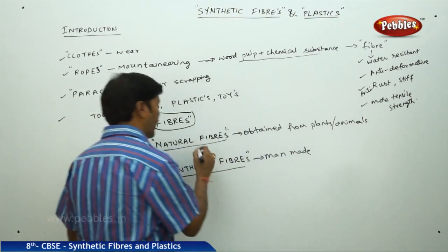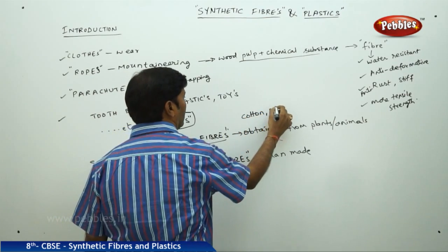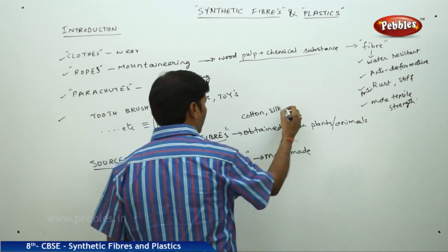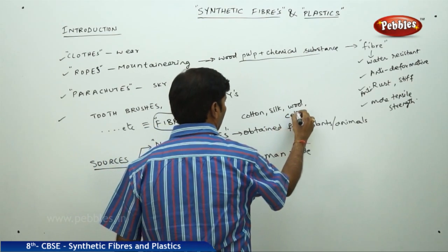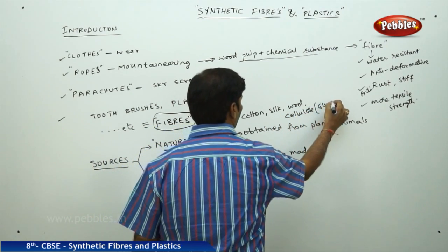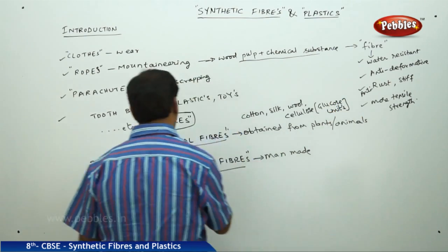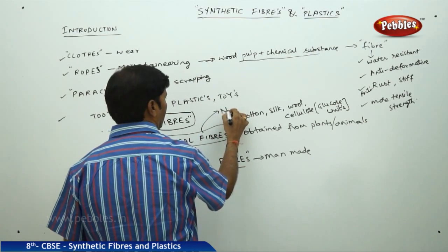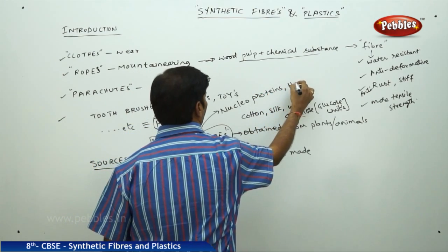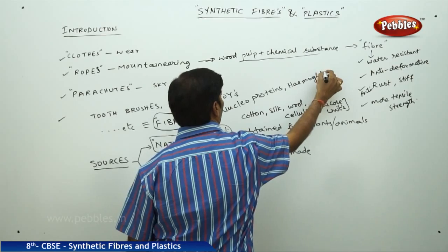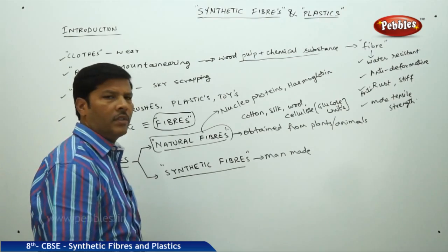What examples can you take for natural fibers? You can take cotton, silk, and wool. You can also take cellulose, which contains glucose units. Biologically, natural fibers also include nucleoproteins and hemoglobin, which is present in the blood — it also comes under natural fiber.